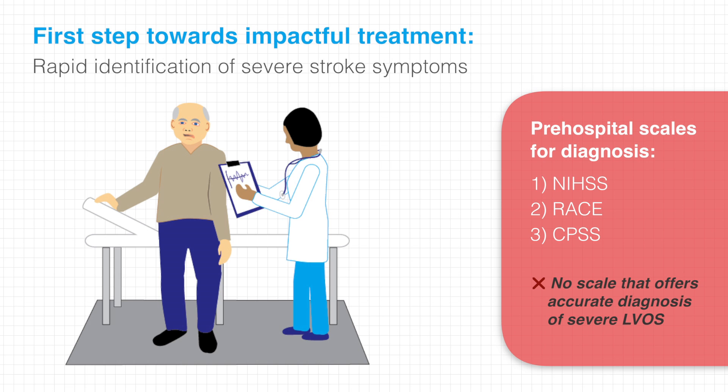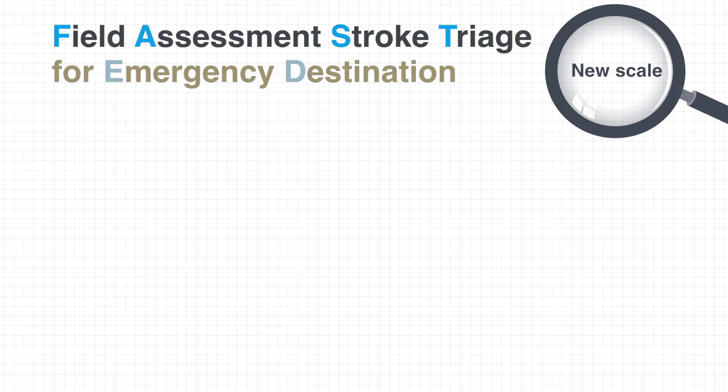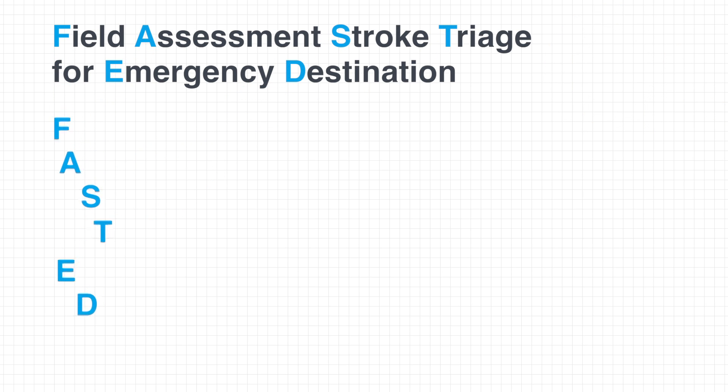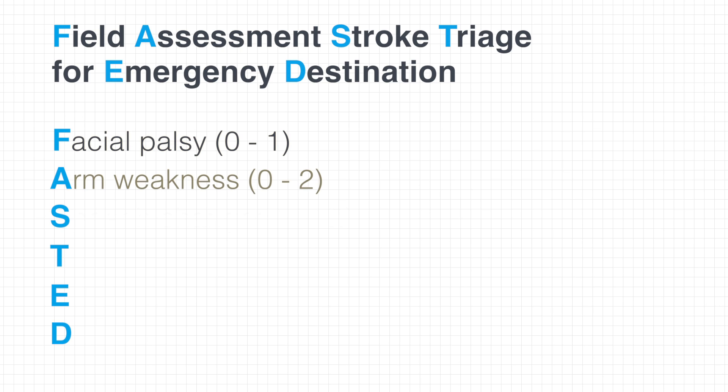To accurately predict LVOS, researchers designed a new scale: Field Assessment Stroke Triage for Emergency Destination, or FAST-ED. FAST-ED scoring includes facial palsy, arm weakness, speech changes, time, eye deviation, and denial or neglect.